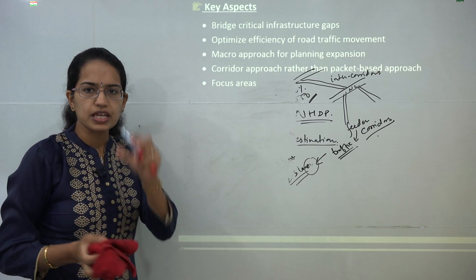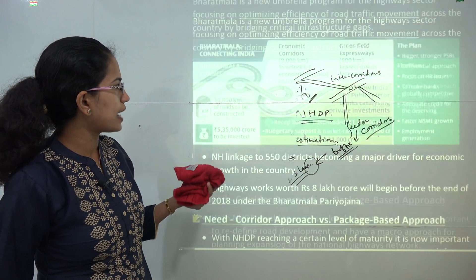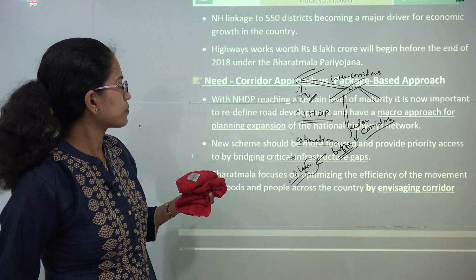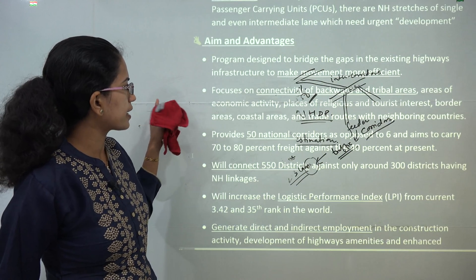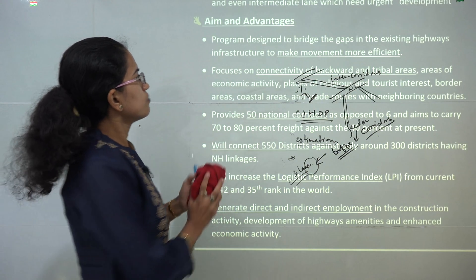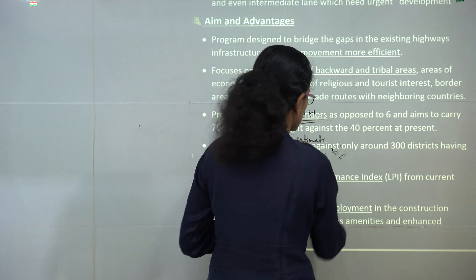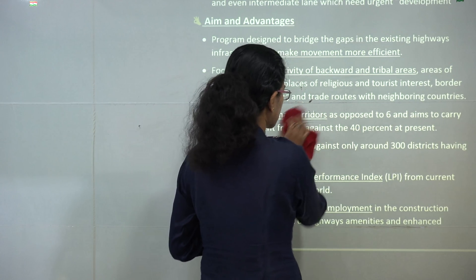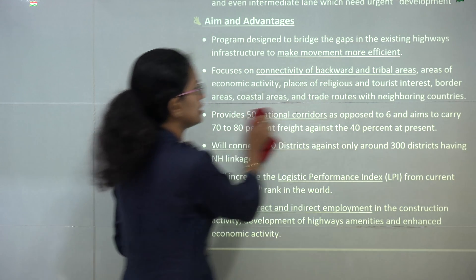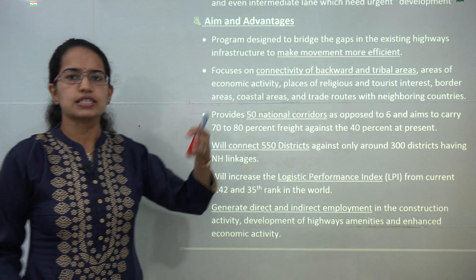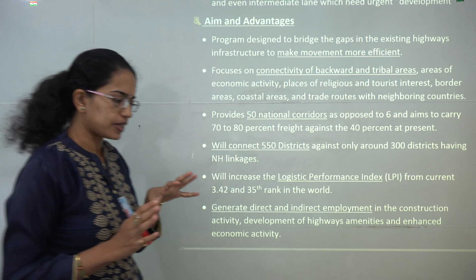Working around specific areas with good planning is important. The aims and objectives include increasing connectivity, improving efficiency, connecting backward areas, and connecting places of religious and tourist interest — so it should be a kind of global connectivity.